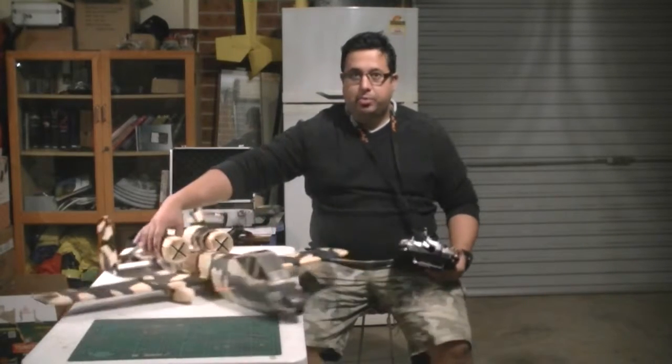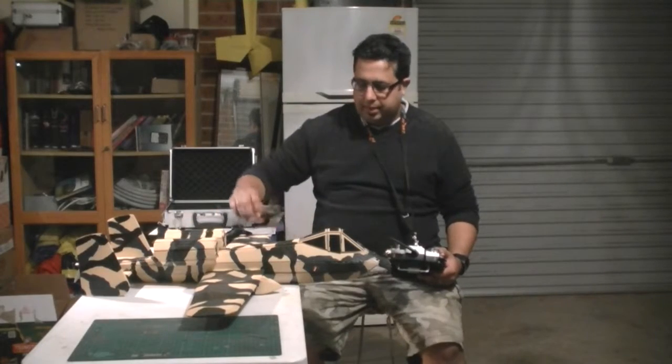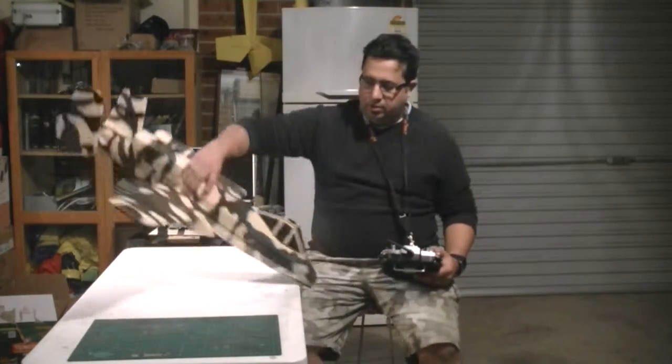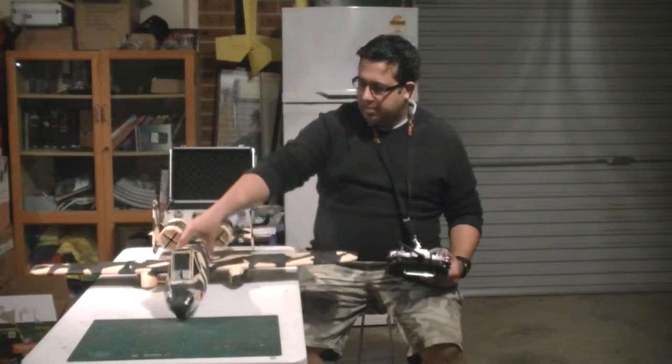So this is an older FR model, 6mm Depron. It is the famous A10 Warthog, it is also known as the Tank Busters plane.